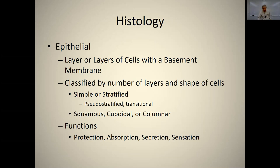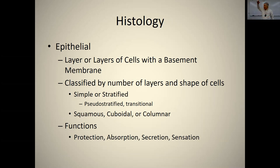There are a couple of unusual types that don't fit neatly. One is called pseudostratified — it's simple, but under a microscope it looks stratified. In a simple epithelium, all cells touch the basement membrane. In stratified, only one layer touches it. In pseudostratified, they all touch the basement membrane but have different shapes, making it hard to see. You need to know the names of these tissues and an example of where you might find each.